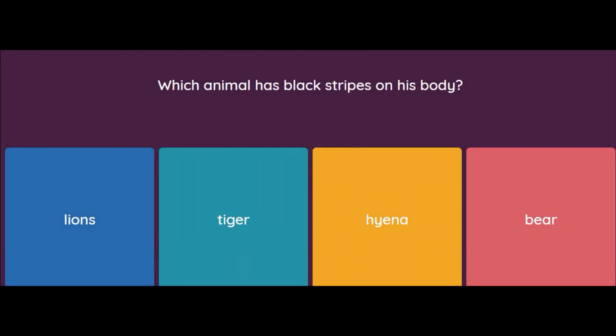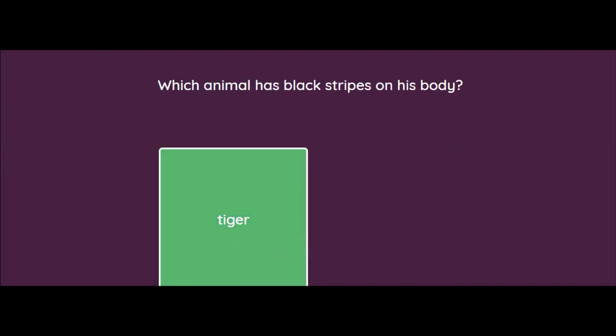This brings us to the last question of Part 2. I hope you have enjoyed the video. I wish you all the very best for your life and exams. Last question: which animal has black stripes on his body? Options: Lion, Tiger, Hyena, or Bear. Again an easy one — Tiger has black stripes on his body. Thank you children for watching, have a lovely day.